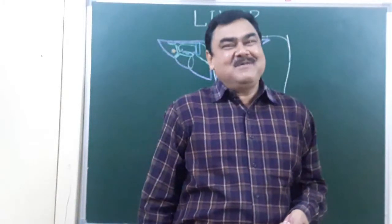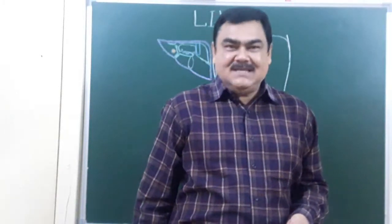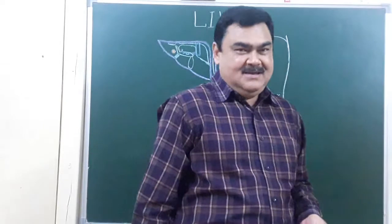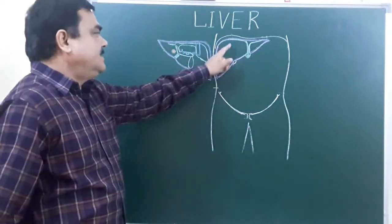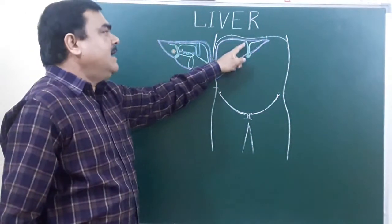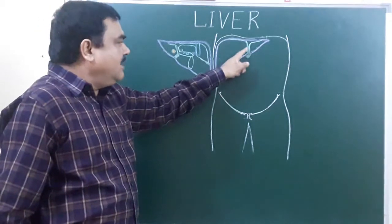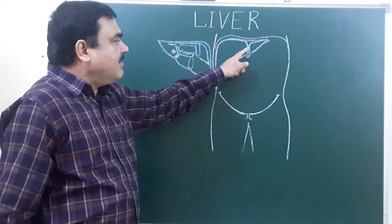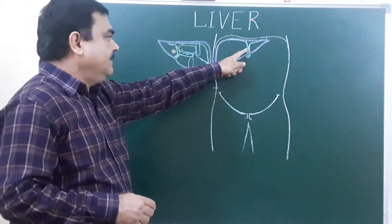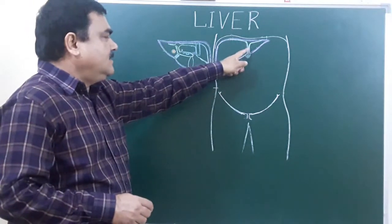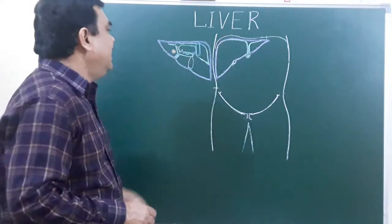Now we will discuss about the peritoneum relation. Here you can see this is the line of reflection of peritoneum — here peritoneum reflects and forms the falciform ligament.